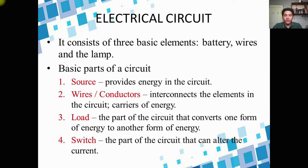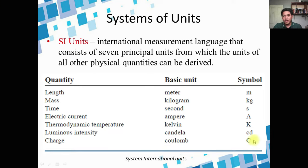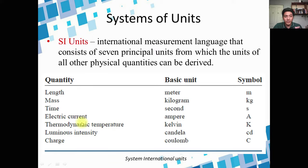It's important for us to recall our system of international units — SI units — an international measurement language composed of seven principal units. In our discussion we will be using current in amperes (A), charge in coulombs (C), named after Charles Augustin de Coulomb, and time in seconds. We should familiarize ourselves with electric current, time, charge, and sometimes temperature.